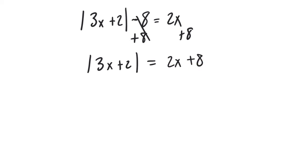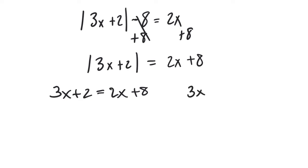Just like anything else, we have to split this up. It's good that on the right side we have a binomial because you need to understand how to handle that. First, let's do the positive version: 3x plus 2 is equal to 2x plus 8. Then for the other equation, we'd normally set it up as 3x plus 2 equal to negative — then we'd have 2x plus 8. Writing it that way makes clear that the negative gets distributed.